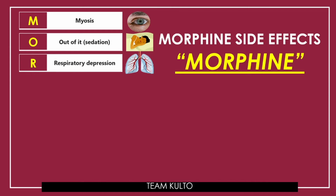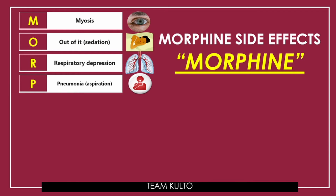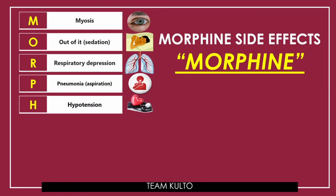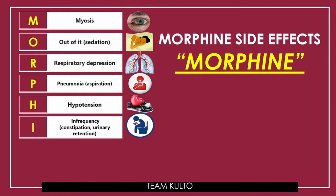P for pneumonia or aspiration. H for hypotension — it is a downer, it stimulates your parasympathetic effect. When you talk about your parasympathetic effect, everything goes down except for your GI and GU. Kaya nagkakaroon ng risk for aspiration din — because of the parasympathetic effect, there are more GI secretions. I for infrequency — constipation and urinary retention.